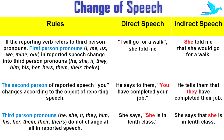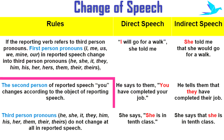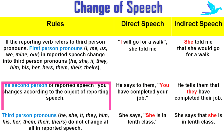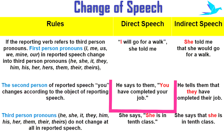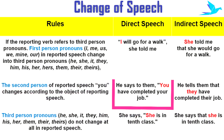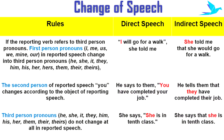The second rule: the second person of the reported speech — 'you' — changes according to the object of the reporting speech. For example: he says to them, 'You have completed your job.' In indirect speech: he tells them that they have completed their job. Here, 'you' is changed to 'they.'